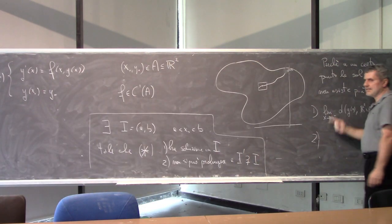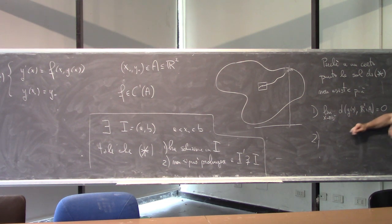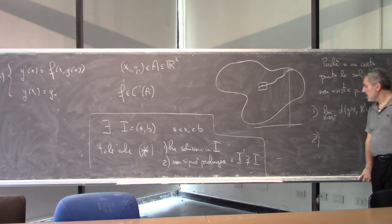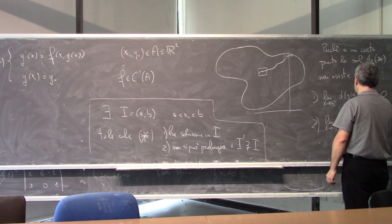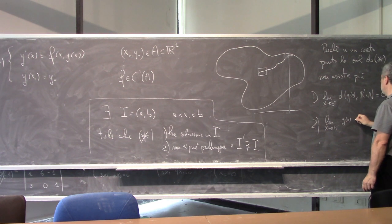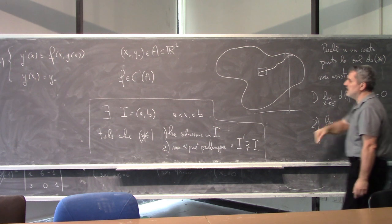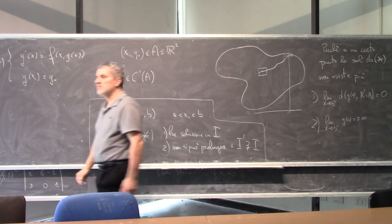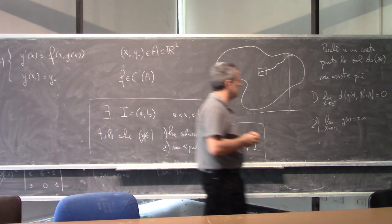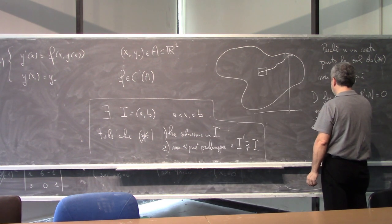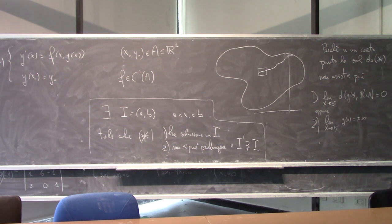Il secondo caso, che moralmente è la stessa cosa del primo, è invece quando il limite per x che tende a B da sinistra di y(x) fa più o meno infinito — cioè se la soluzione va a più infinito o meno infinito. In quel caso, altrettanto, la soluzione in B non c'è più. Questi sono sostanzialmente i due casi in cui la soluzione a un certo punto sparisce.